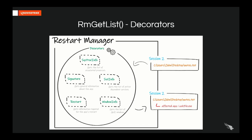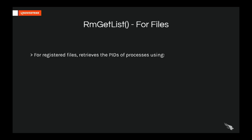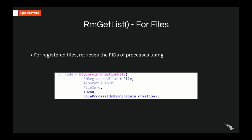For files, under the hood, the Restart Manager uses the function NtQueryInformationFile with the ID FileProcessIdsUsingFileInformation. This function iterates over all the processes of the system, retrieves each process's handle table — a table containing the handles the process has currently opened — and for each handle, compares whether it corresponds to the registered file, and if so, checks whether the access is blocking other accesses or just opening it.